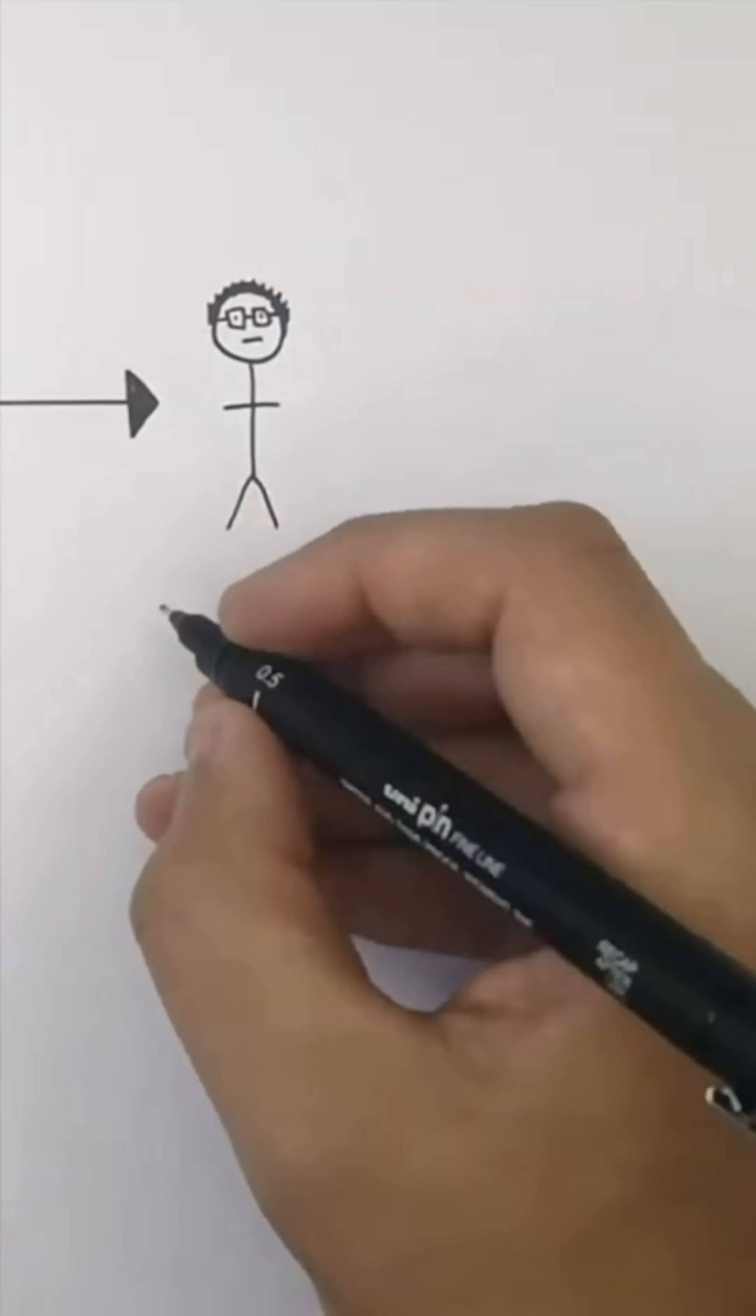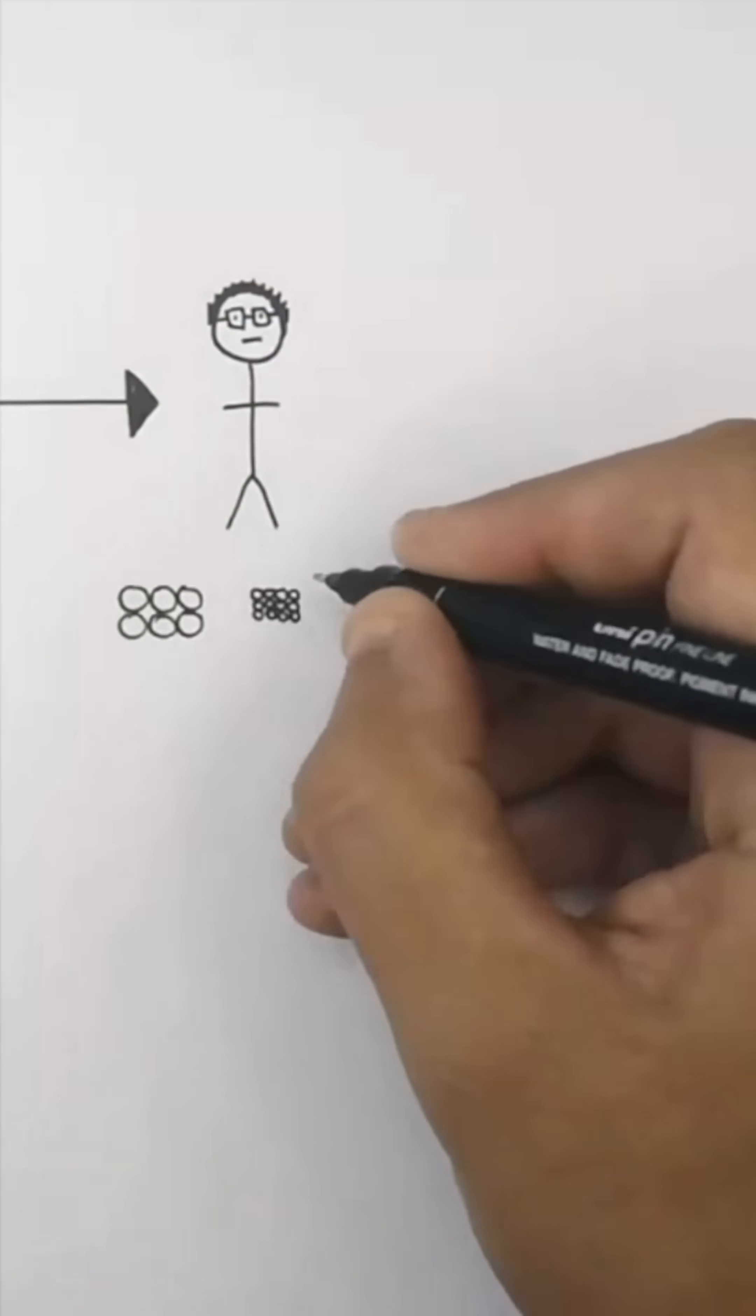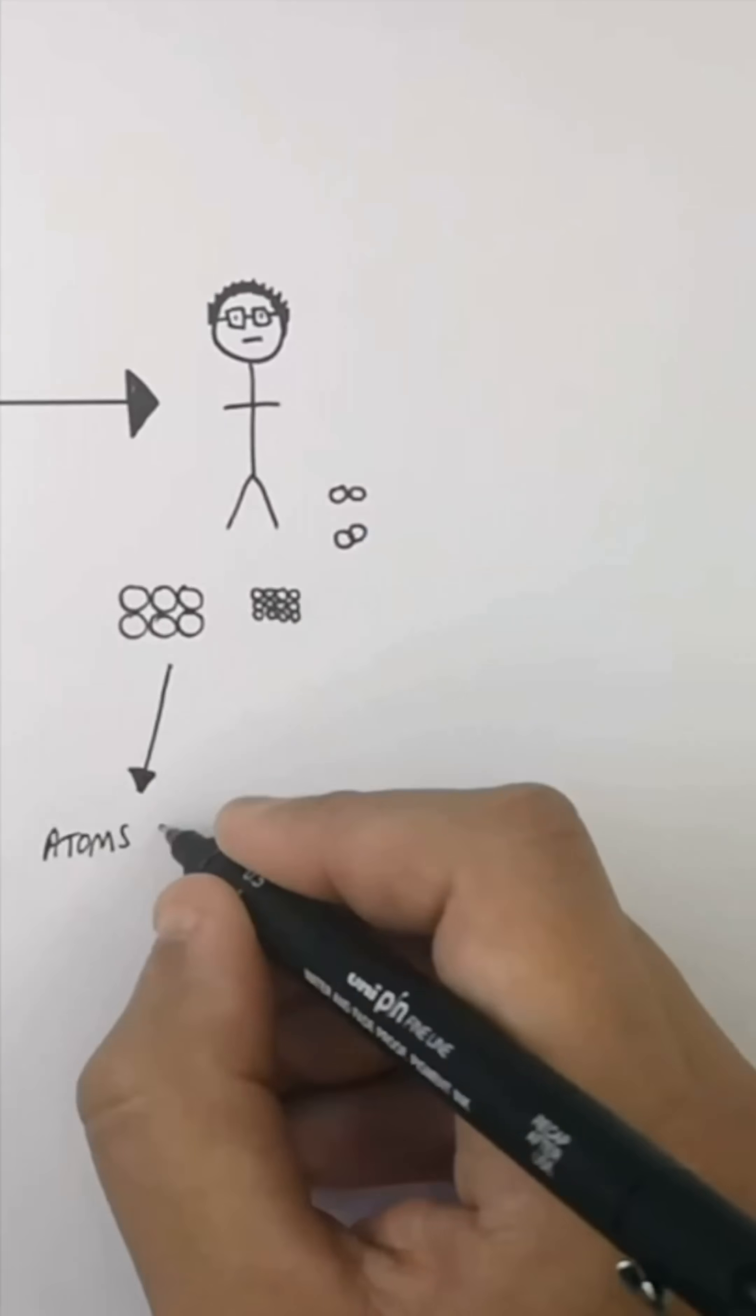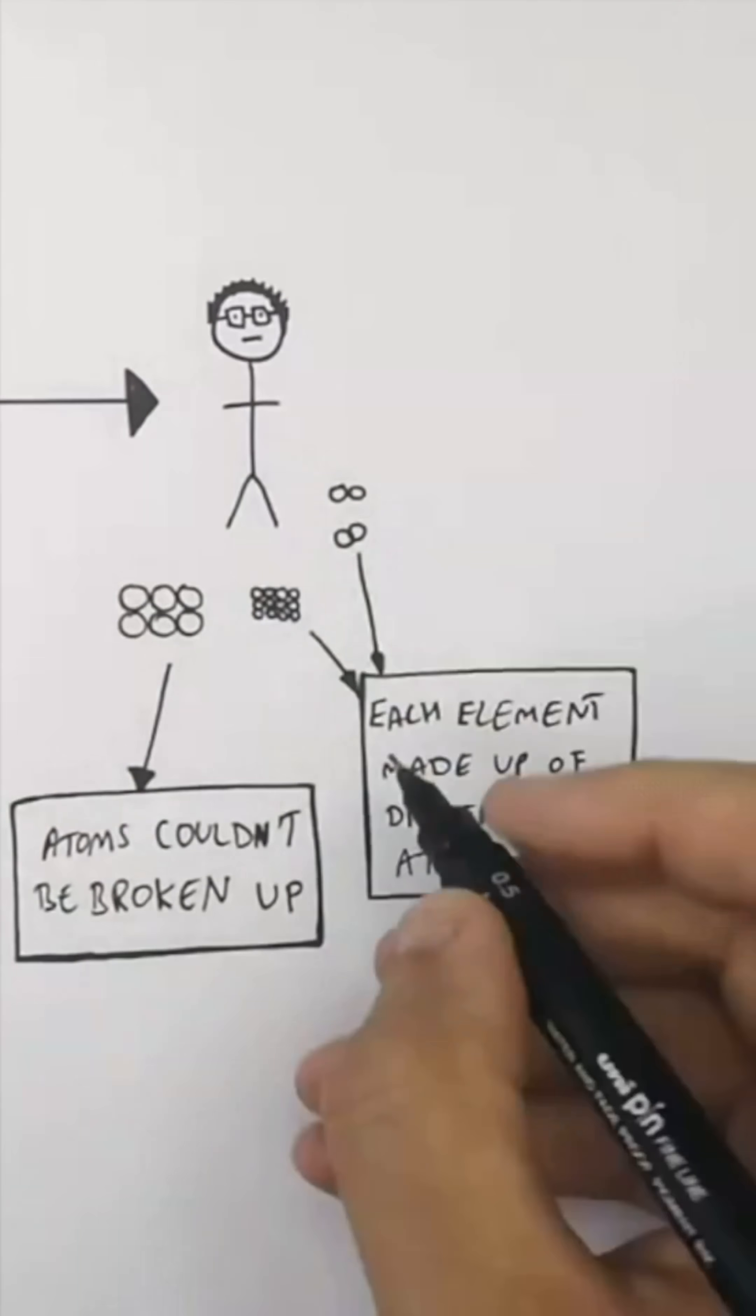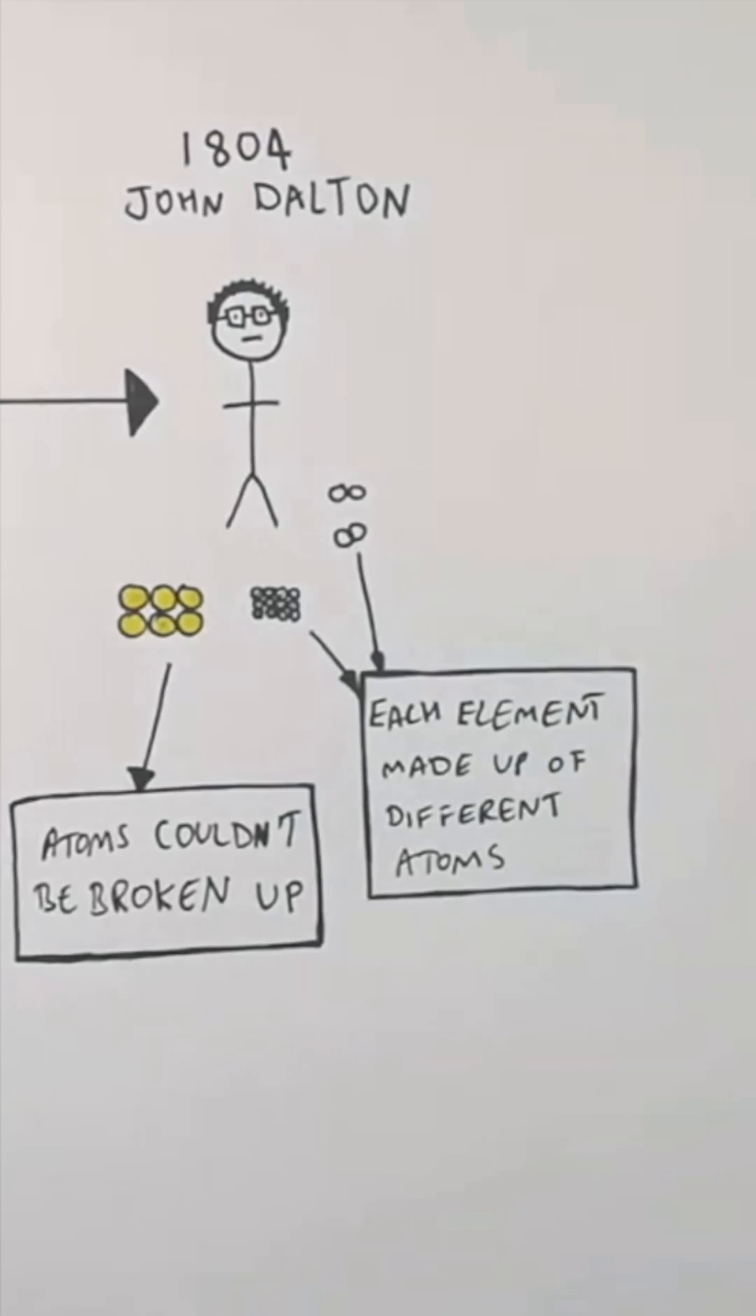And this here is John Dalton. In 1804, John Dalton said that atoms couldn't be broken up. They're the smallest things. Each element had its own specific atom. So that is John Dalton, 1804.